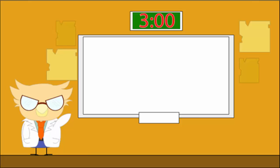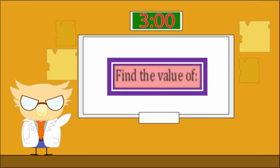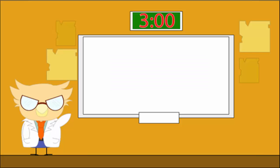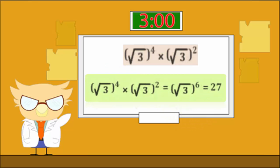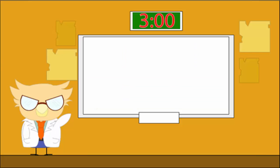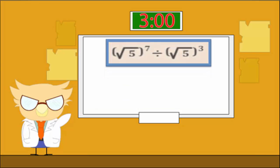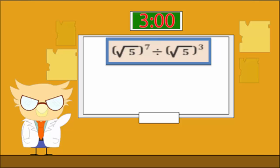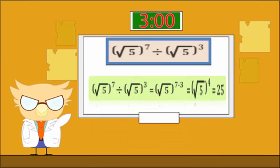Examples — Find the value of: Number 1: Root 3 to the power 4 times Root 3 to the power 2. Solution: Root 3 to the power 4 times Root 3 to the power 2 equals Root 3 to the power 6, which is 27. Number 2: Root 5 to the power 7 divided by Root 5 to the power 3. Solution: Root 5 to the power 7 minus 3 equals Root 5 to the power 4, which is 25.